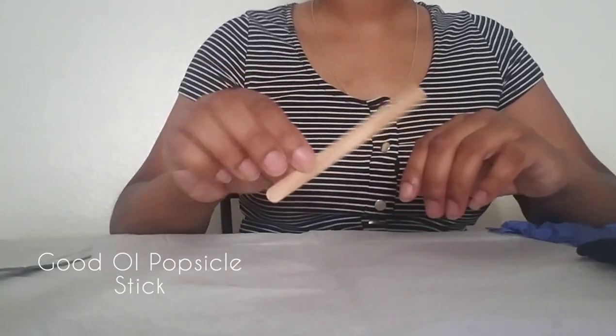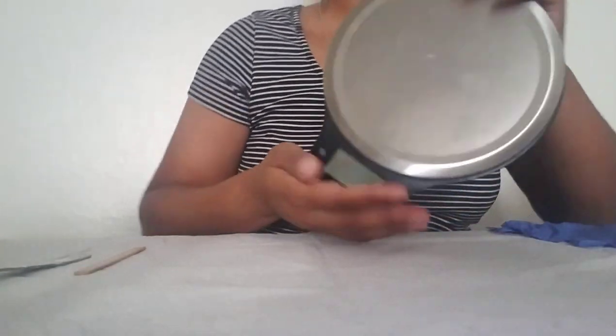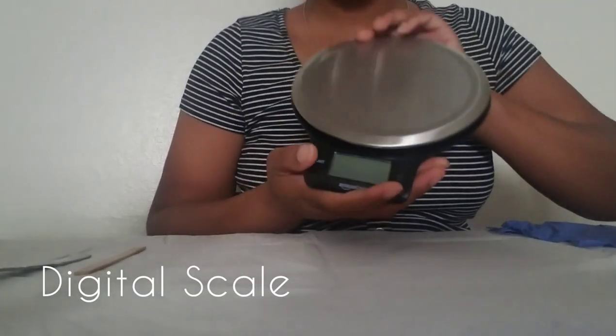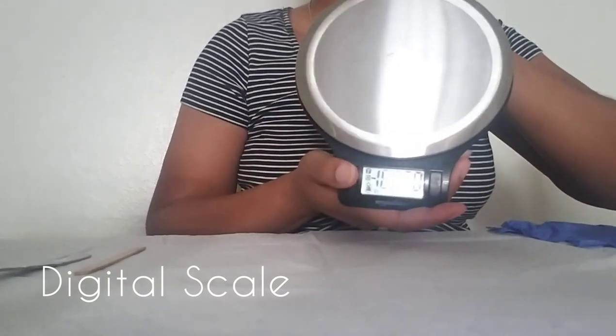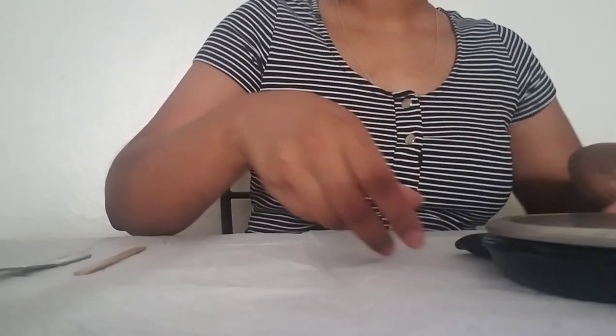Right here I'm just showing you guys all the utensils I'm using to make this product. Right here is my digital scale I got from Amazon for $10-$11, and of course I used Prime so I got it in one or two days.